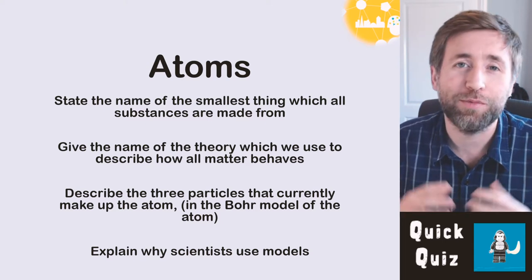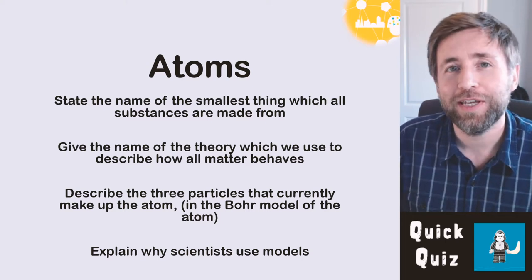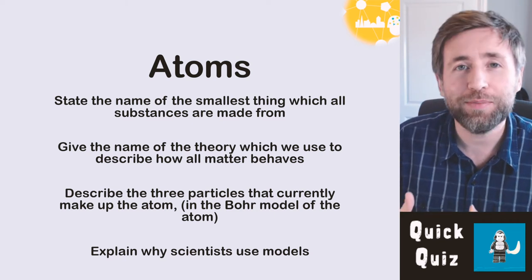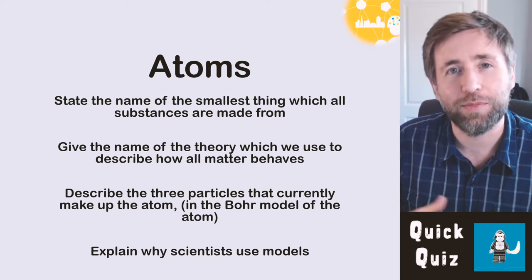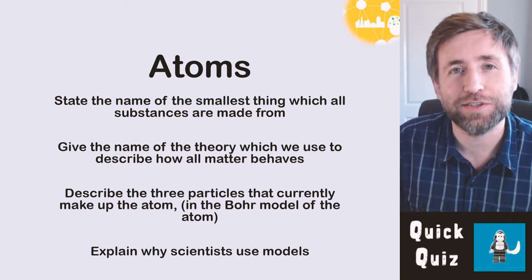State the name of the smallest thing from which all substances are made. Give the name of the theory that we use to describe how all matter behaves. Describe the three particles that make up the current model of the atom, the Bohr model. Explain why scientists use models.